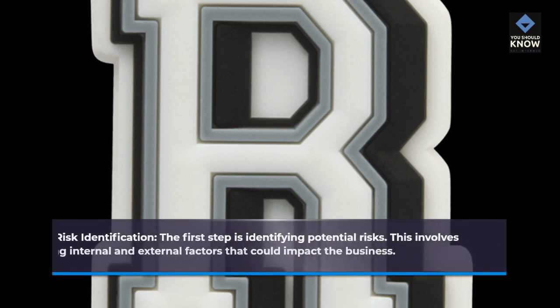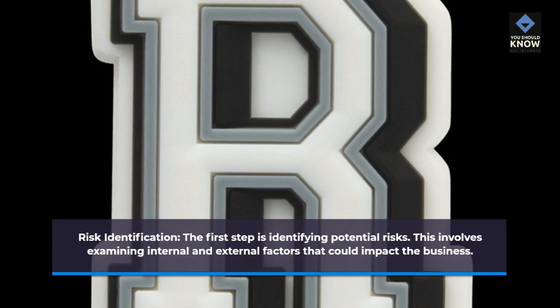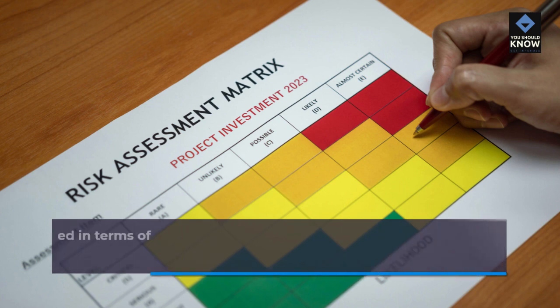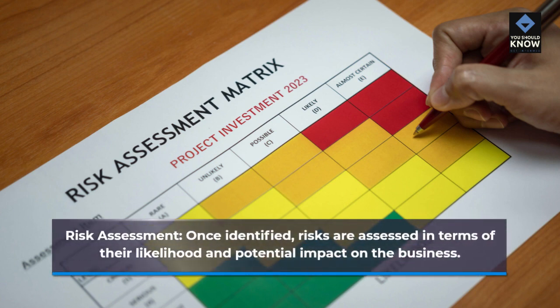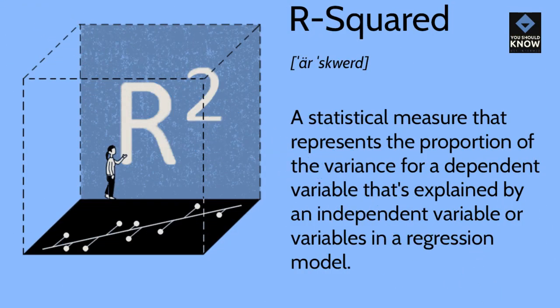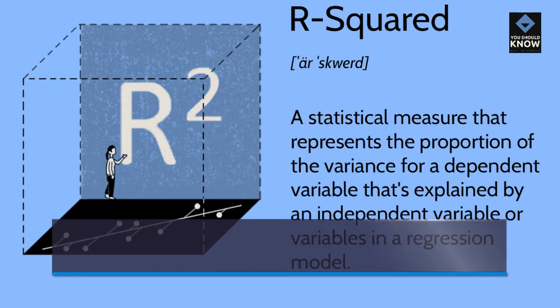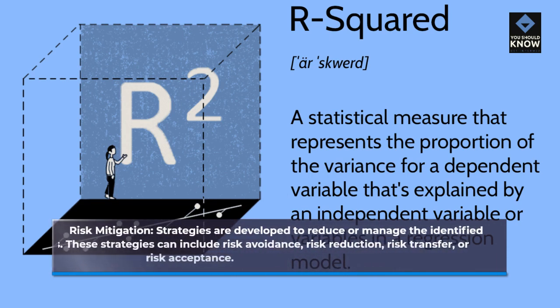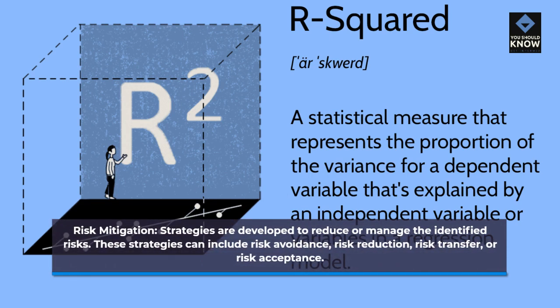Key elements of risk management. Risk identification: the first step is identifying potential risks by examining internal and external factors that could impact the business. Risk assessment: once identified, risks are assessed in terms of their likelihood and potential impact on the business. Risk mitigation: strategies are developed to reduce or manage the identified risks. These strategies can include risk avoidance, risk reduction, risk transfer, or risk acceptance.